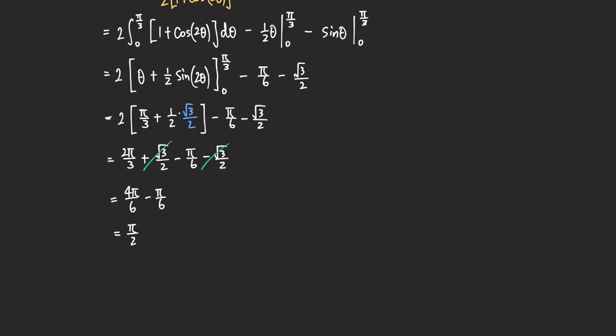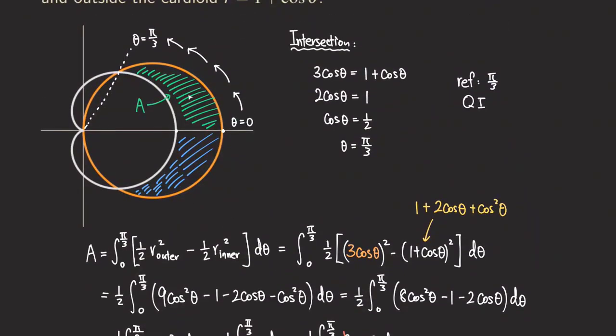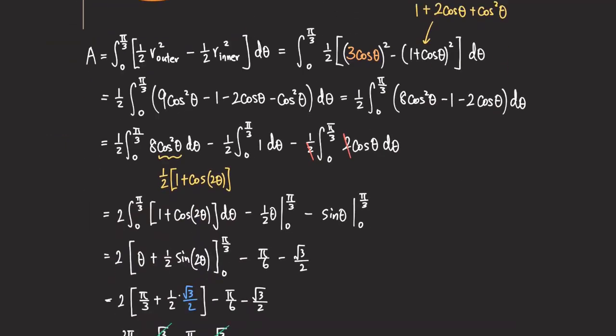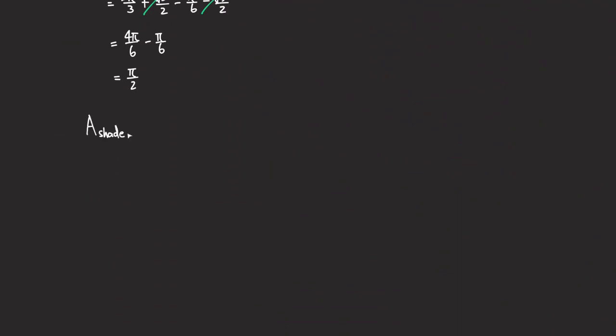But pi over two is not the final answer — it only gives us A, which is half of the shaded region. We need to double it. So the final area of the shaded region is 2 times A equals 2 times pi over two equals pi. That's the final answer. Thank you for watching. I'll see you next time.